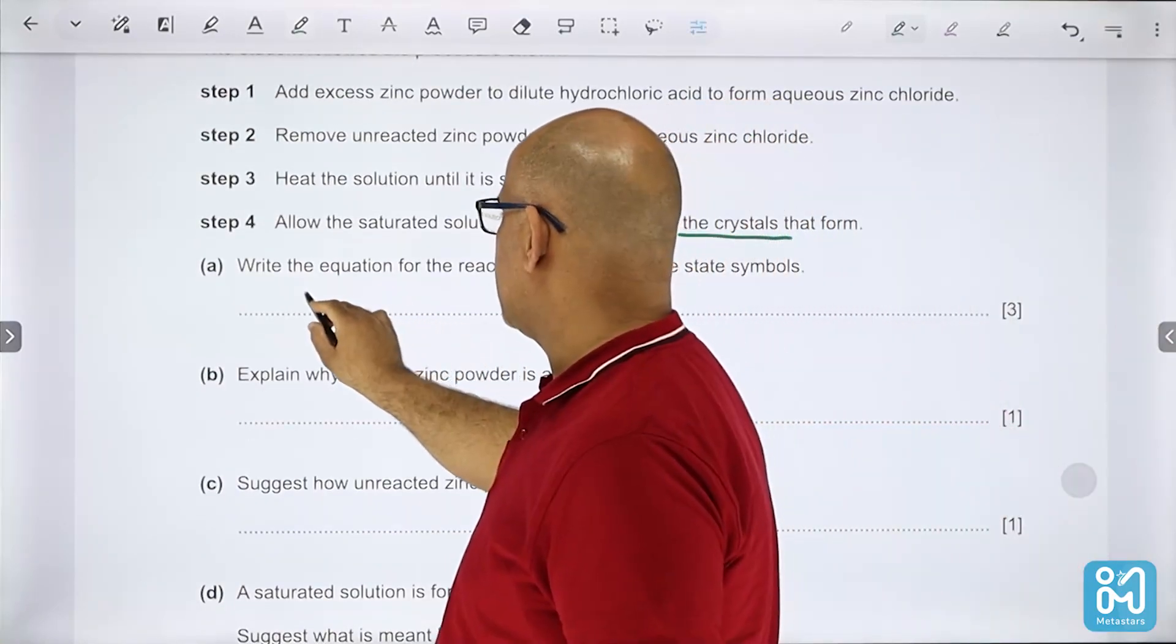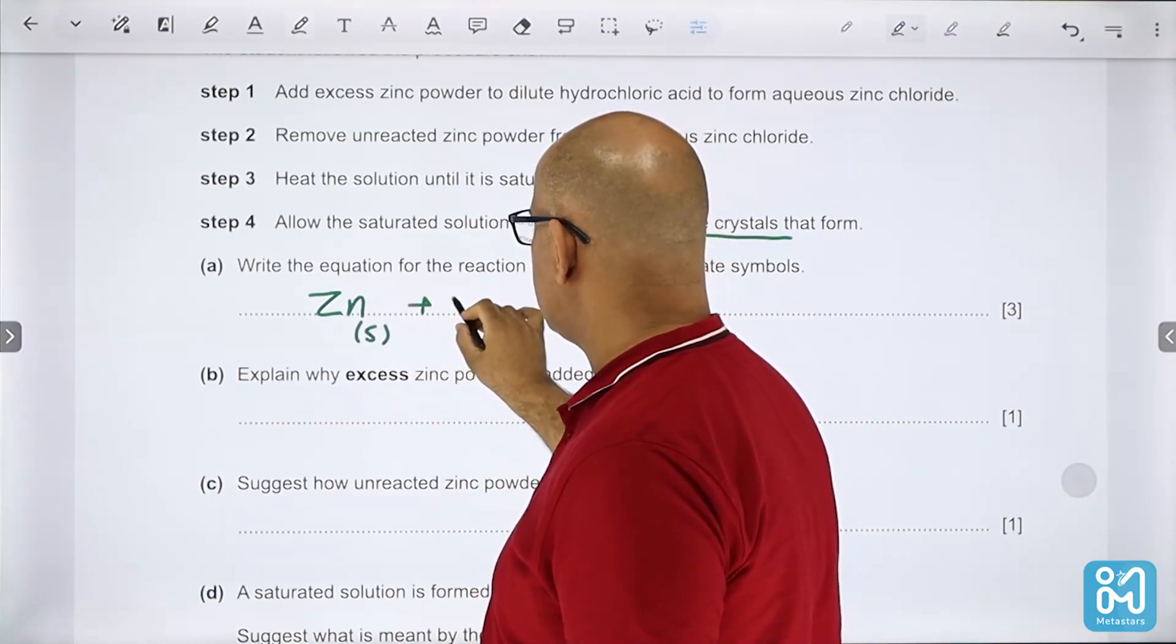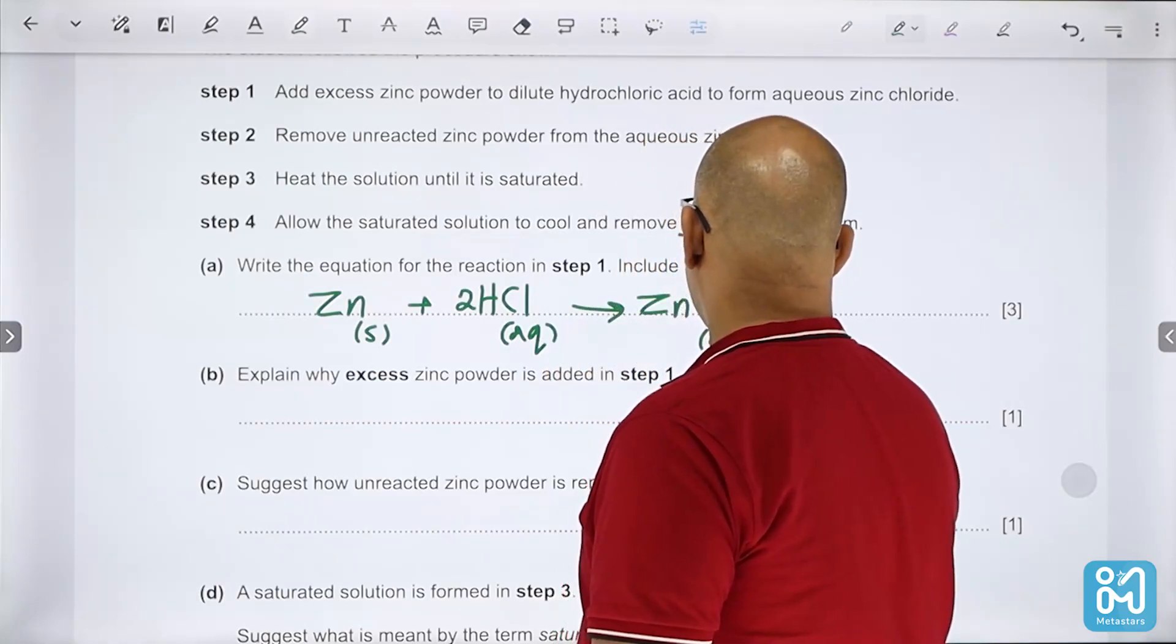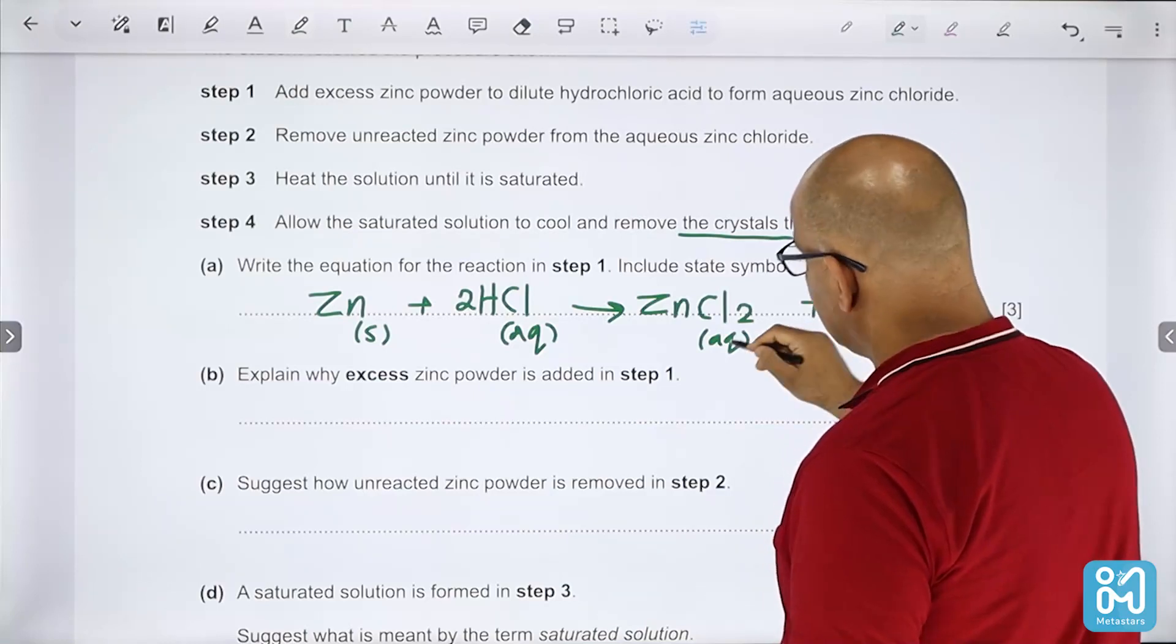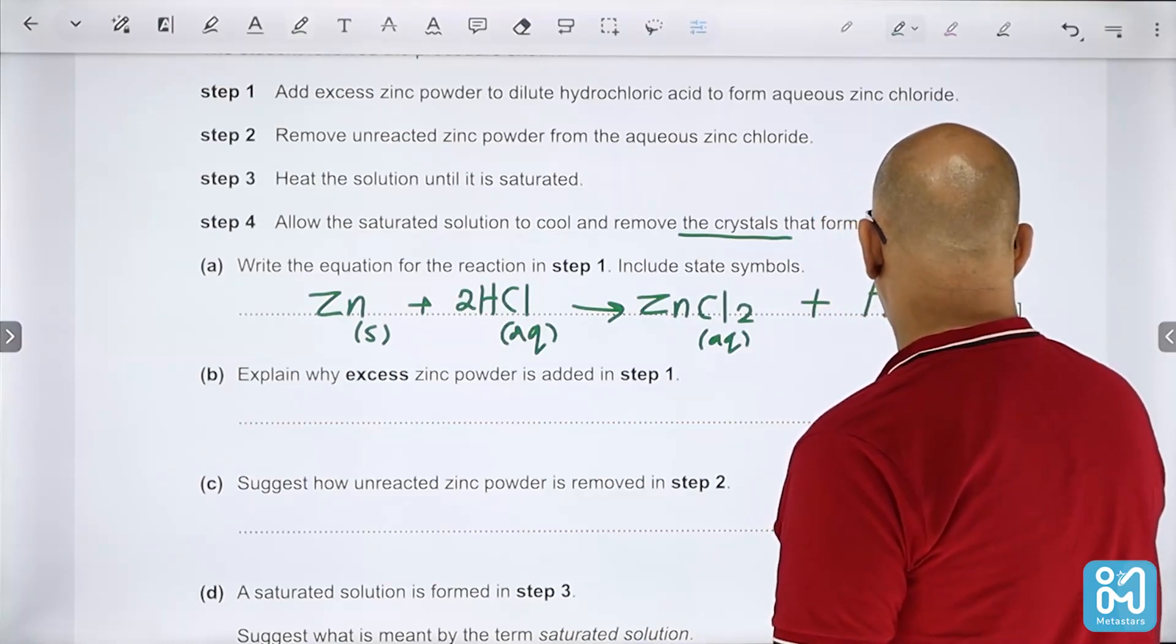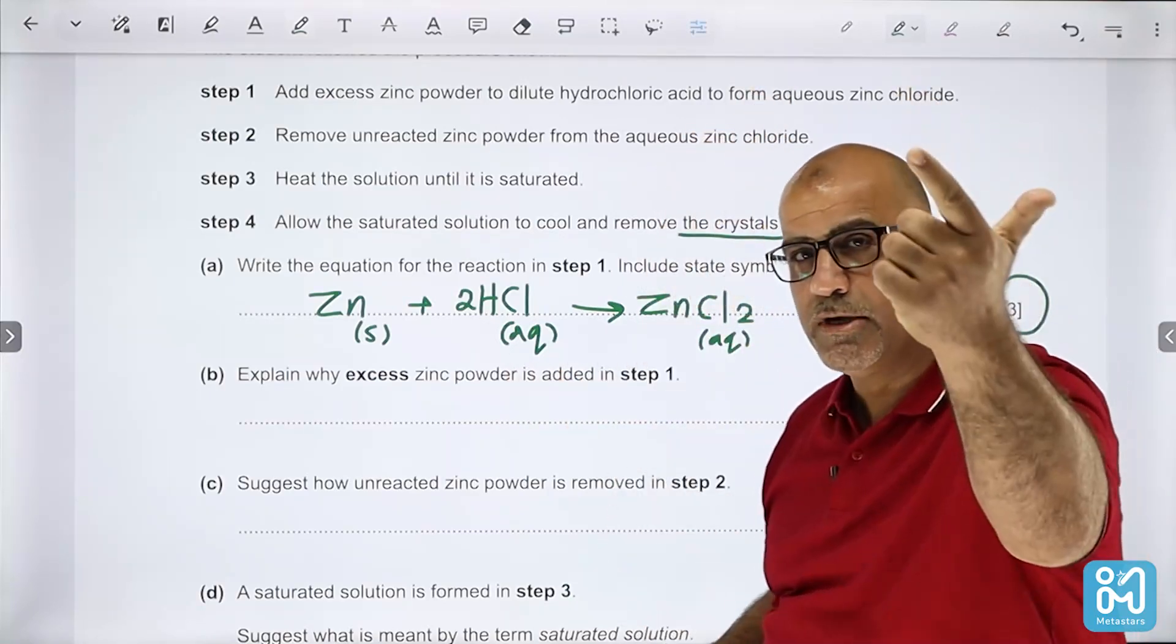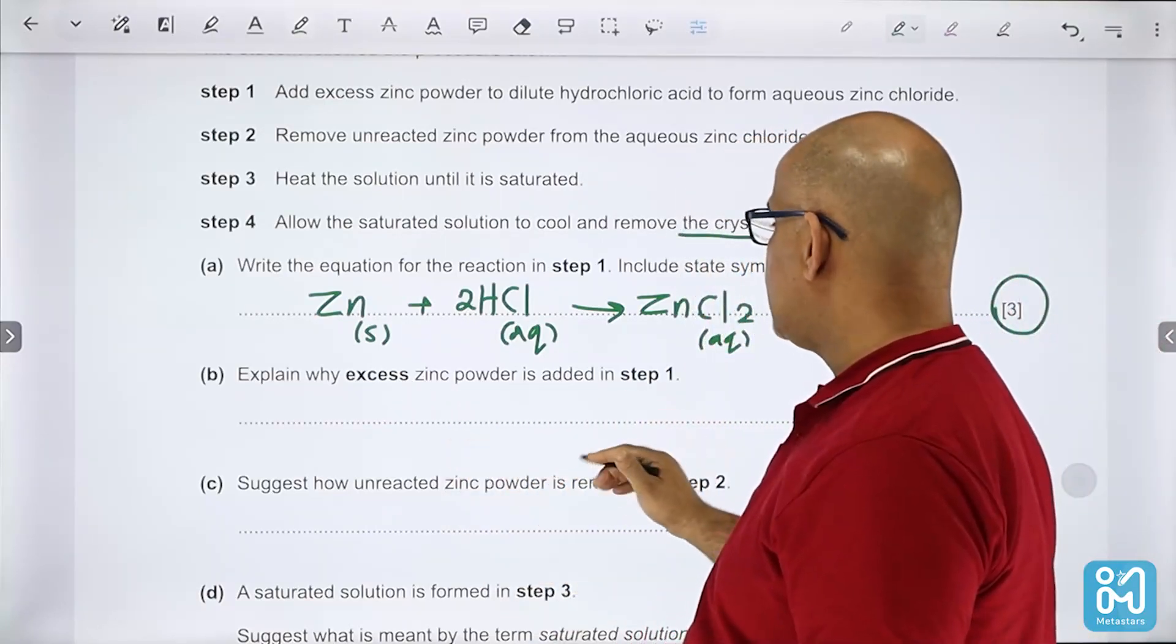Write the equation for the reaction in step one. In step one we have zinc powder with dilute hydrochloric acid. Zn solid plus 2HCl aqueous gives ZnCl2 aqueous plus H2 gas. He is asking you to write the state symbols because he wants you to know if the zinc chloride is in aqueous solution or soluble or not. We have 3 marks because he's asking you to write the equation balanced with correct state symbols.